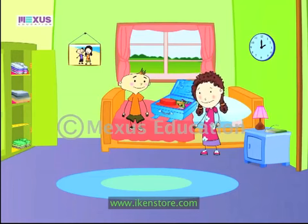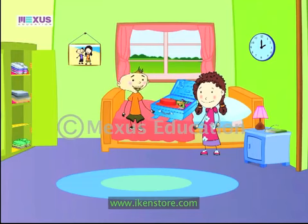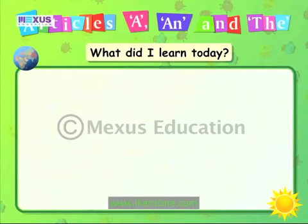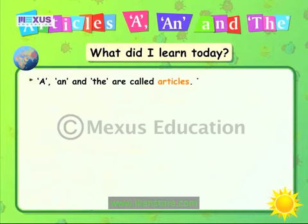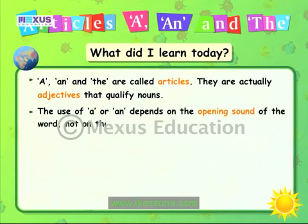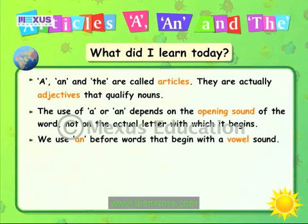I am done packing, Fleck! I can't wait to go on this holiday — I am going to have a wonderful time! I am sure you will, ZeeZee. Don't forget to bring back all that you are taking. Now let's run through some of the points we have learned: 'a', 'an' and 'the' are called articles — they are adjectives that qualify nouns. The use of 'a' or 'an' depends on the opening sound of the word, not the actual letter it begins with. We use 'an' before words that begin with a vowel sound, and 'a' before words that begin with a consonant sound.